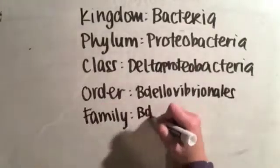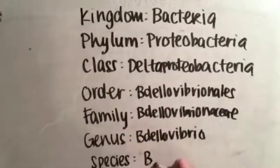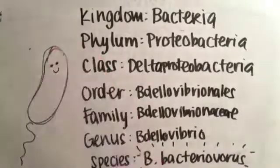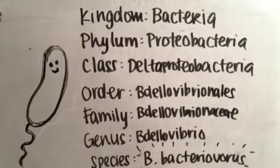Species under this class are primarily sulfate and sulfur-reducing bacteria, dissimilative iron reducers, and bacterial predators.